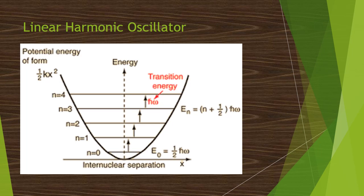Linear harmonic oscillator. Consider a particle executing simple harmonic motion along the x direction and let k be the restoring force per unit displacement. So here potential energy of the particle is half kx square.